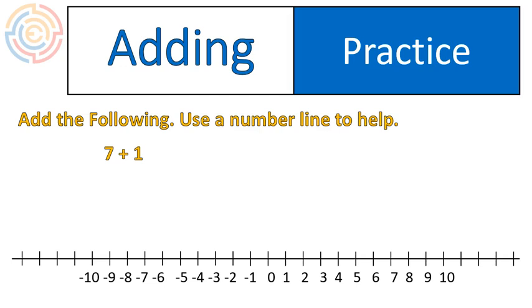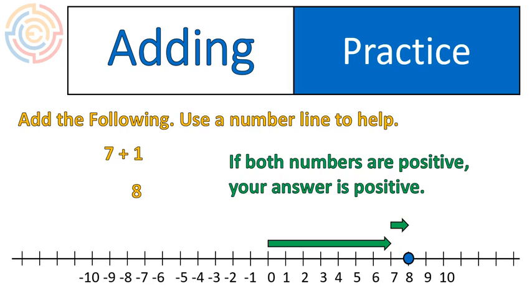Hello and welcome back. Did you realize that 7 plus 1 is 8? I hope so. Let's see what that looks like on a number line. I would start at 0, move 7 places to the right, then I would move one additional place to the right, getting me to the point of 8. This helps to teach us something, that if both numbers are positive, your answer is going to be positive.